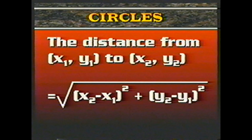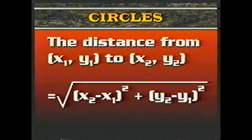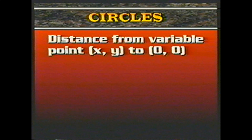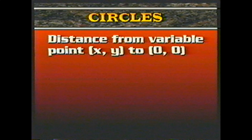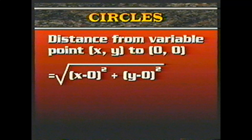Here is one final theorem about line segments associated with a circle. If a secant and a tangent are drawn from an exterior point, then the square of the tangent equals the product of the length of the secant and the length of the secant's external segment. In this figure, that means PA² = PB × PC. That concludes our review of theorems about chords, tangents, and secants.